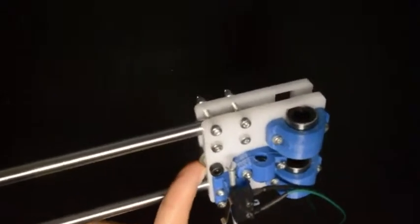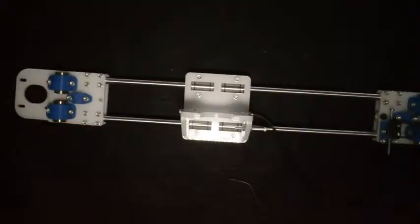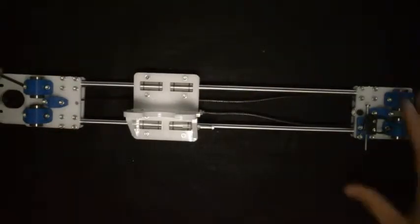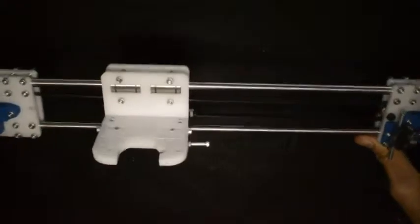Now finally, we will take the GT2 belt, loop it around the bearing, take it back through the X-carriage, and take it through this end that had come out there at the end. When you have done that, the assembly will look like this.